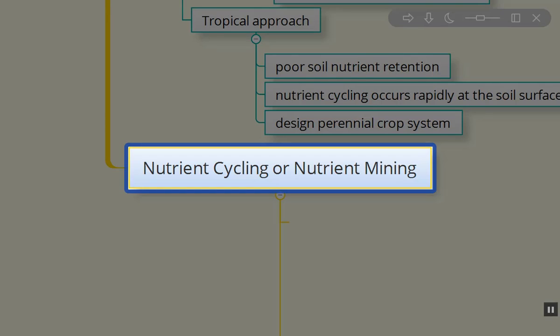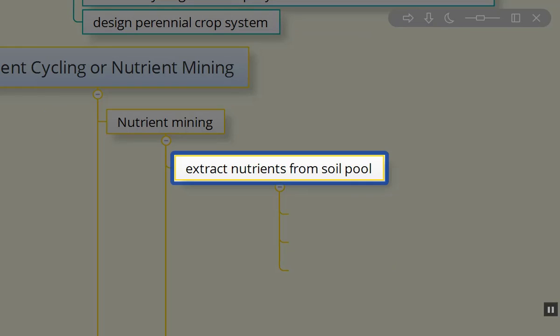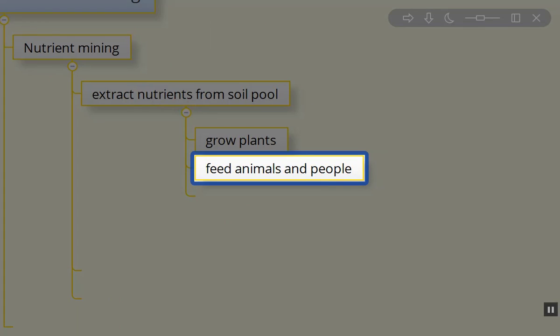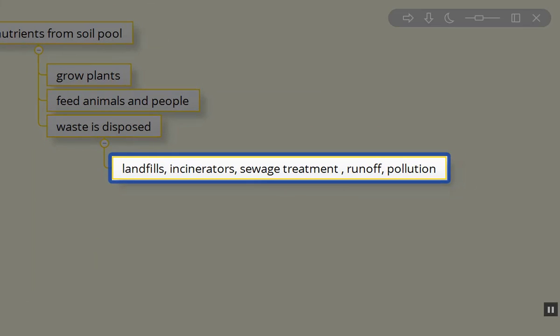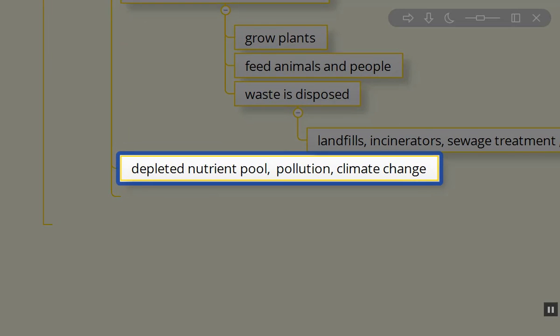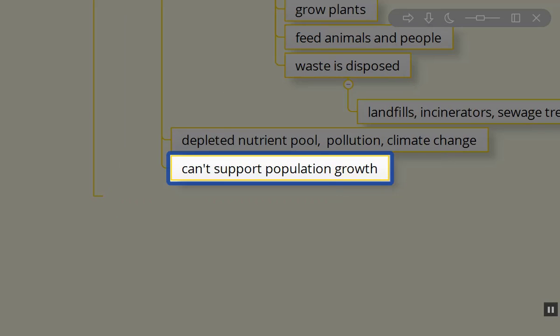Let's talk about nutrient cycling versus nutrient mining. First, we'll discuss the current, the way that we're dealing with our nutrient sources, our nutrient pools today. And, that's nutrient mining. In nutrient mining, we extract the nutrients from the soil pool or the nutrient pool. We grow plants. We feed animals and people. Waste is disposed of in landfills. It's incinerated. We have sewage treatment systems. Some of the materials end up in runoff. Some of it ends up as pollution, non-point sources of pollution. Our nutrient pools are being depleted and we're creating all sorts of problems, including pollution and climate change. This depletion of the nutrient pools can't support further population growth in the future.